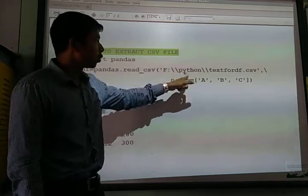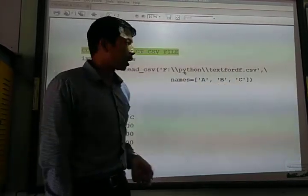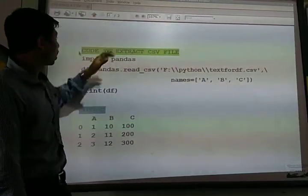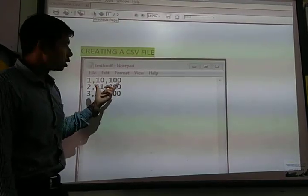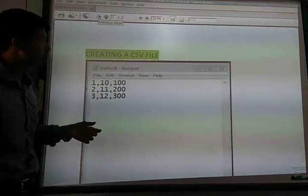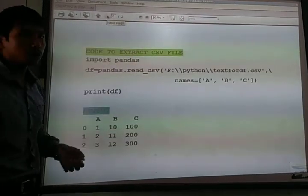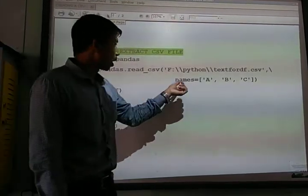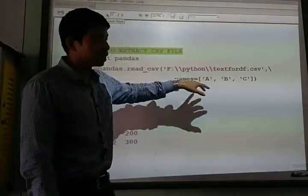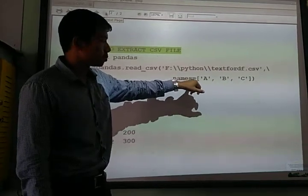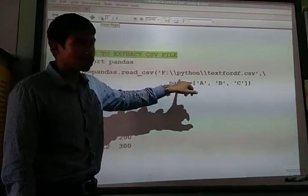And after that, since I've taken these values which don't have any column names, you have to mention column names here also. So here I have used backslash to make it come to a new line, then write names, meaning the names of the columns.